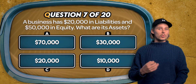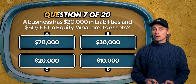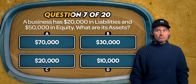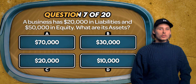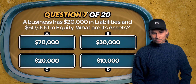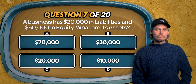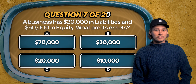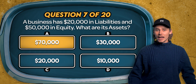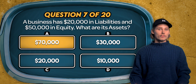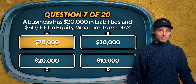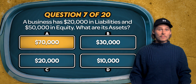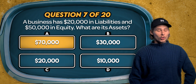Question 7. A business has $20,000 in liabilities and $50,000 in equity. What are its assets? Are they $70,000, $30,000, $20,000, or $10,000? The answer is A. According to the accounting equation, assets equal liabilities plus equity. If we add $20,000 in liabilities to $50,000 in equity, then we get $70,000 in assets.